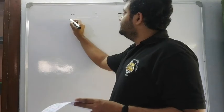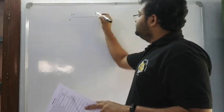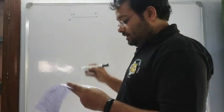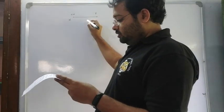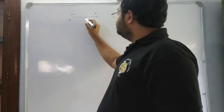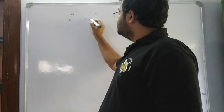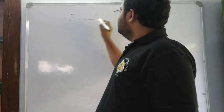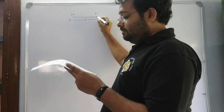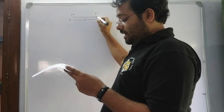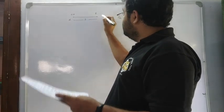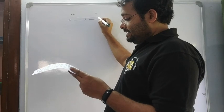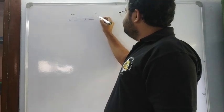At t equal to 0, initial velocity is u. This is time t, and distance in time t is s. Now for the next part, the particle travels s' in time t'.